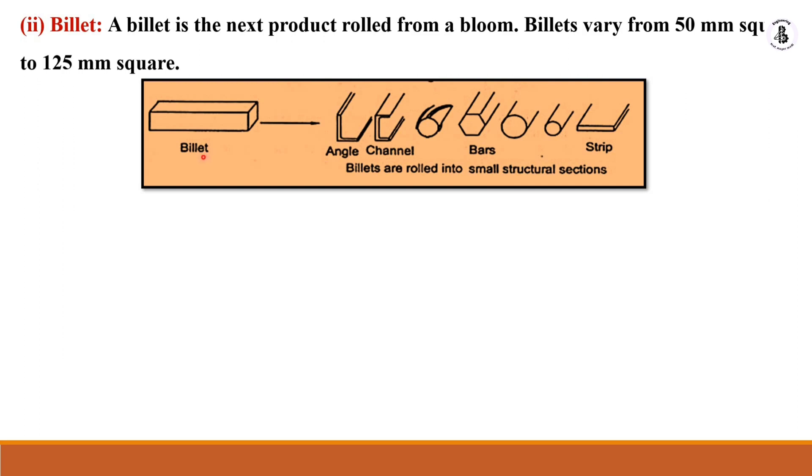This billet is also used as raw material to convert into different shapes and sizes. If you work on billet materials, they can also be used to make angle gates, channels, bars, and strips.